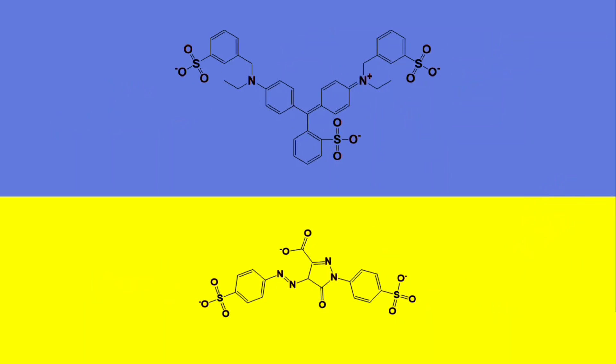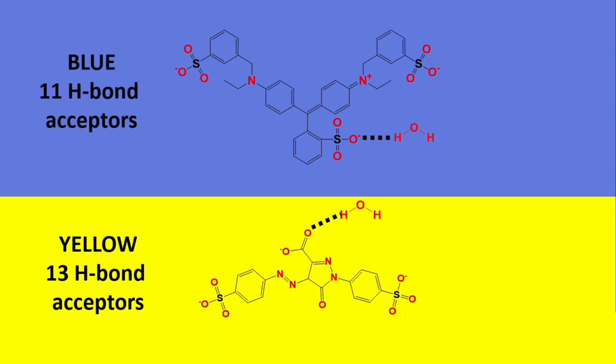Finally, we'll consider the hydrogen bonding that can occur between the dye and water molecules. In this case, any nitrogen or oxygen atom on these dye molecules can form hydrogen bonds with water. It turns out the yellow dye has 13 such atoms, while the blue dye only has 11.